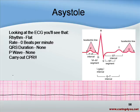In closing, let's talk about asystole. Everybody knows asystole — it's a flat line. The rhythm is flat, there's no rate, there's no QRS, and there's no P wave. The line is just flat all the way across. You would carry out CPR immediately.